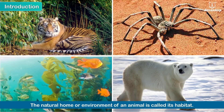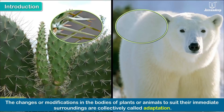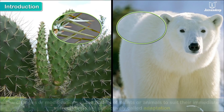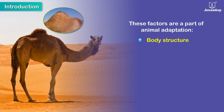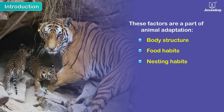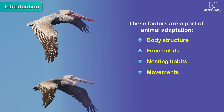The natural home or environment of an animal is called its habitat. The changes or modifications in the bodies of plants or animals to suit their immediate surroundings are collectively called adaptation. The animal's body structure, its food habits, nesting habits and movement are a part of its adaptation to its immediate environment.